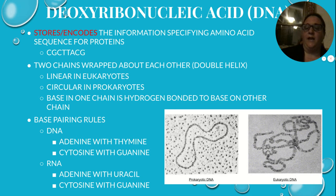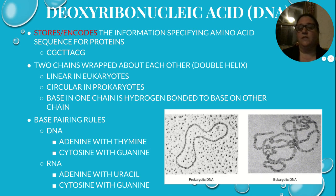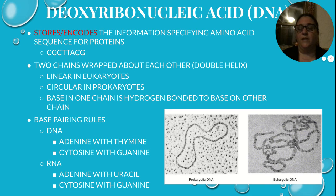So deoxyribonucleic acid is the storing and encoding of information that tells your body what specific amino acid sequence to make. So a sequence like C, G, C, T, T, A, C, G — cytosine, guanine, cytosine, thymine, thymine — is going to code for a specific type of amino acid, which when you put all those together we're going to get a protein, and that's DNA's job.